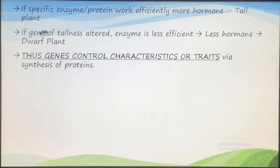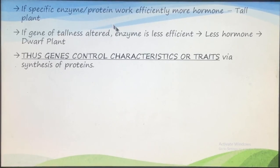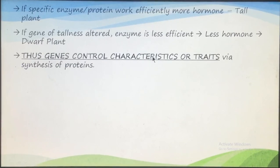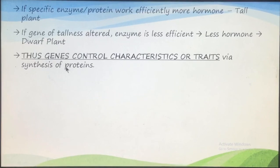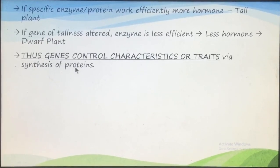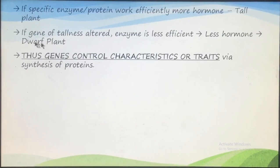If some alteration occurs in the gene — which is a segment of DNA — and as a result the protein or enzyme produced is in less amount or is different, then less hormone will be produced and the plant will be dwarf. So it is the genes which control the characteristics or traits. The function of the gene is to synthesize a protein; this protein acts as an enzyme. If more enzyme is present, more product is formed and the dominant character appears. If some alteration in the gene leads to a less efficient enzyme, less hormone is produced and the plant is dwarf.